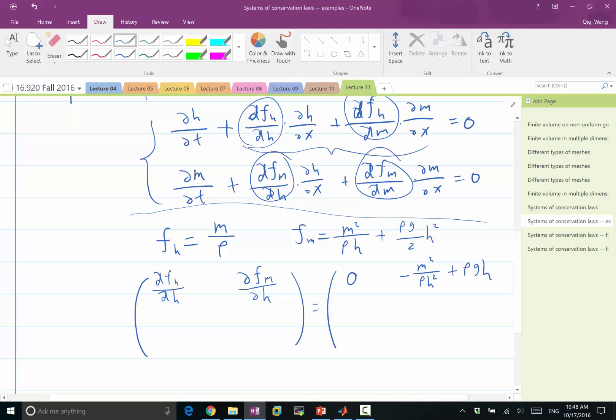So this is the derivative of FM to H. Now, the derivative of FH to M, that's easy, right? It's one over rho. And derivative of FM to M is going to be also easy, two times M divided by rho H.